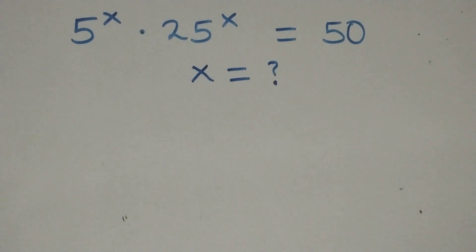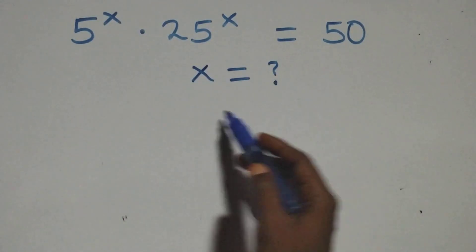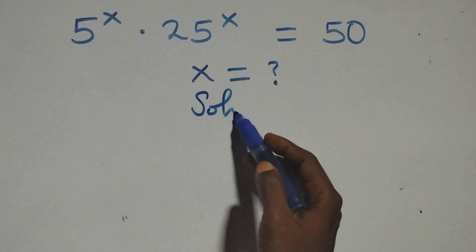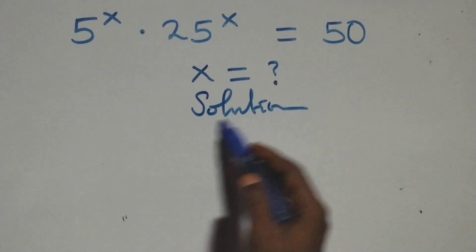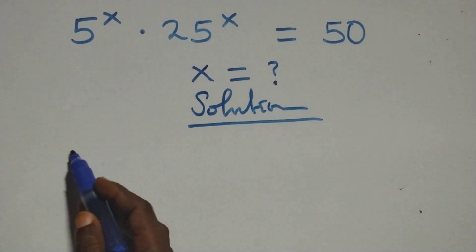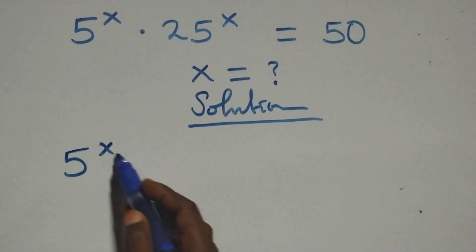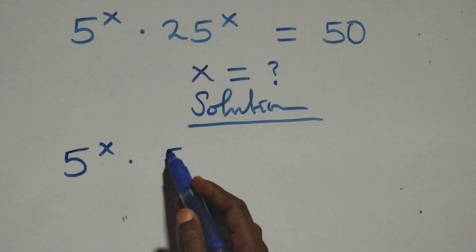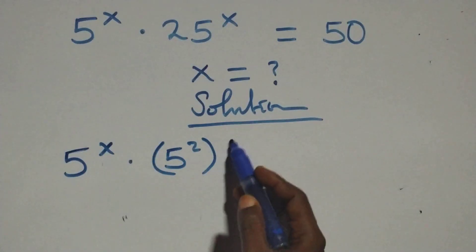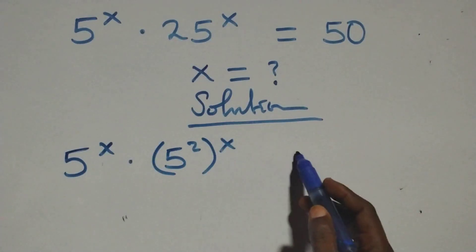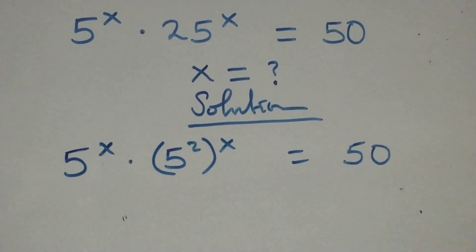Hello, you are welcome. Here we have a nice exponential equation to solve. We can rewrite this as 5 raised to the power x times 25, which can be written as 5 squared, raised to the power x, equals 50.